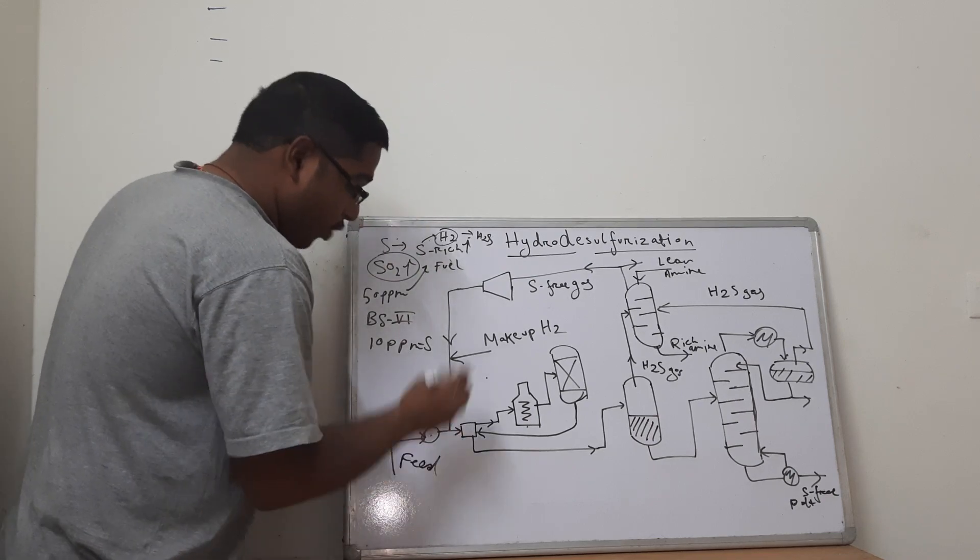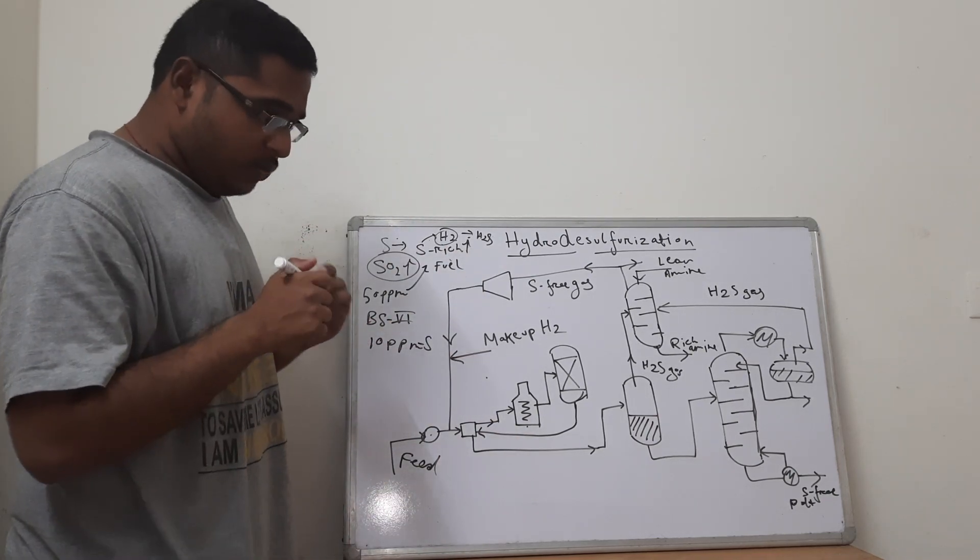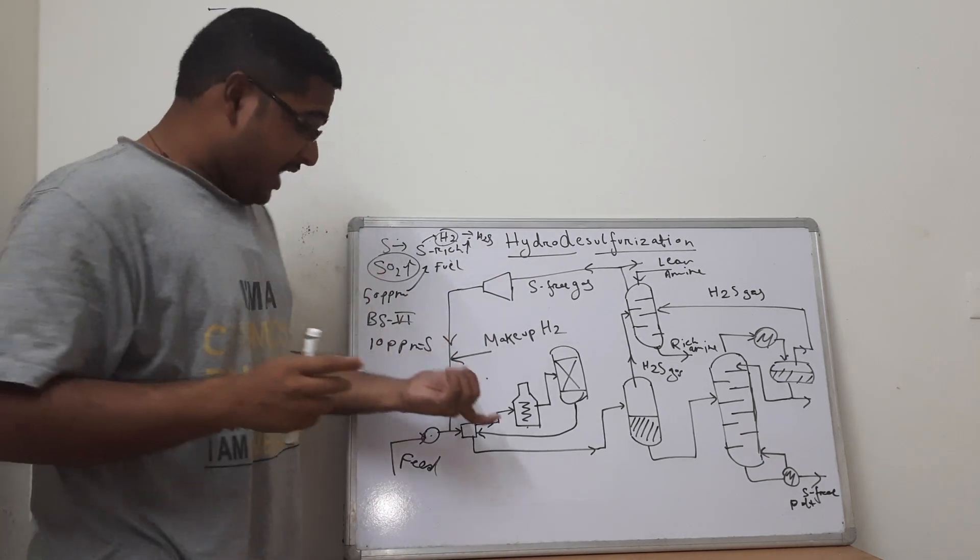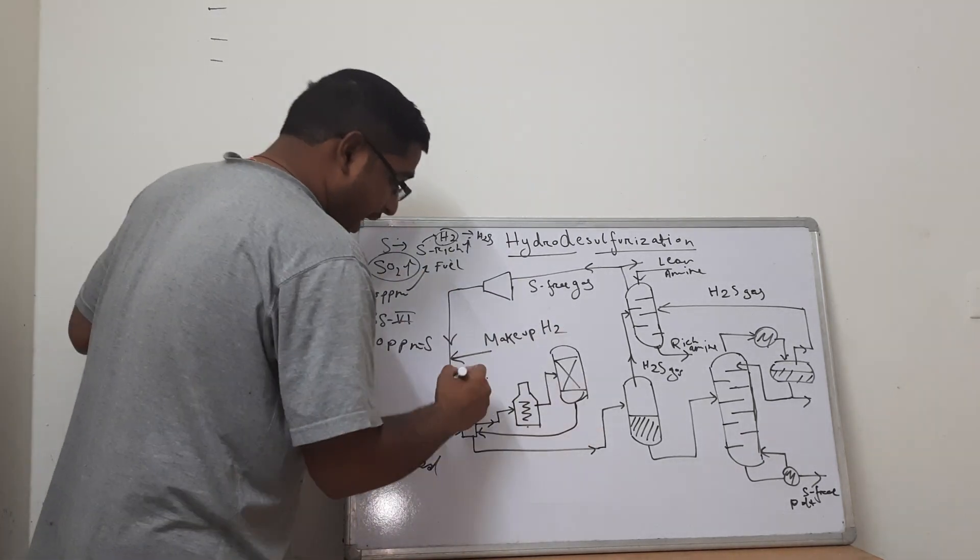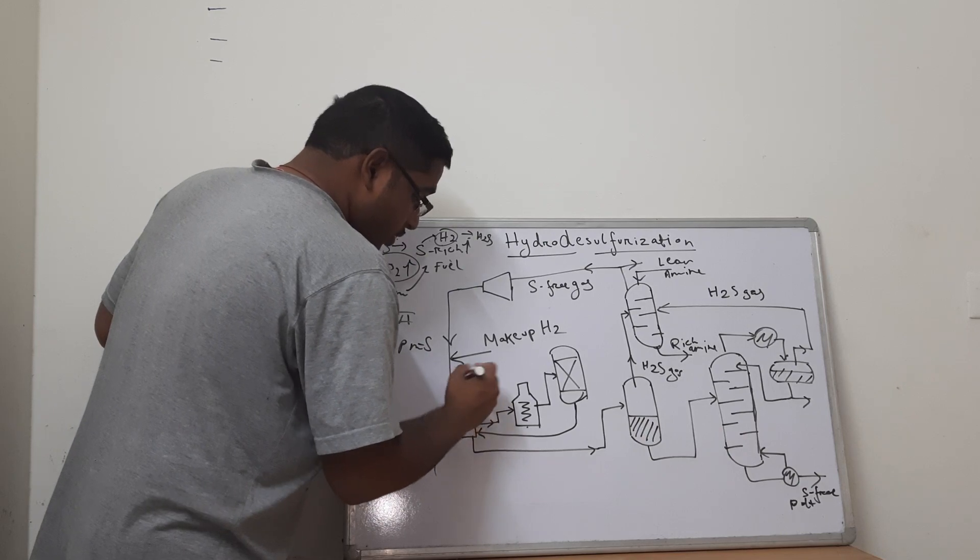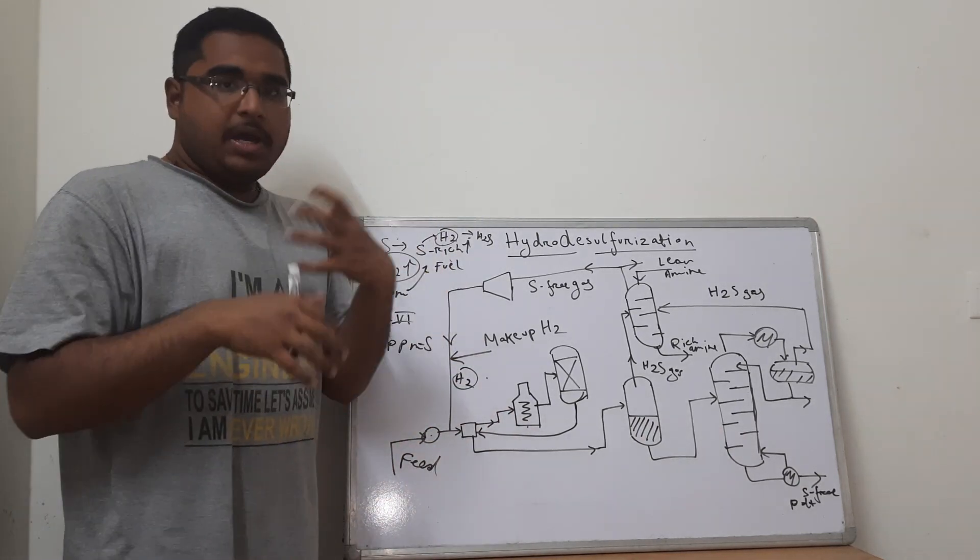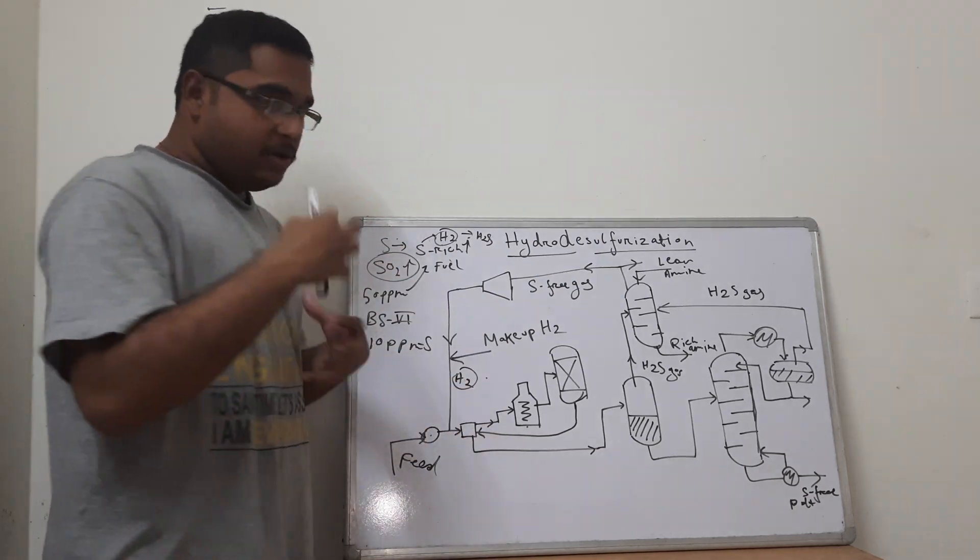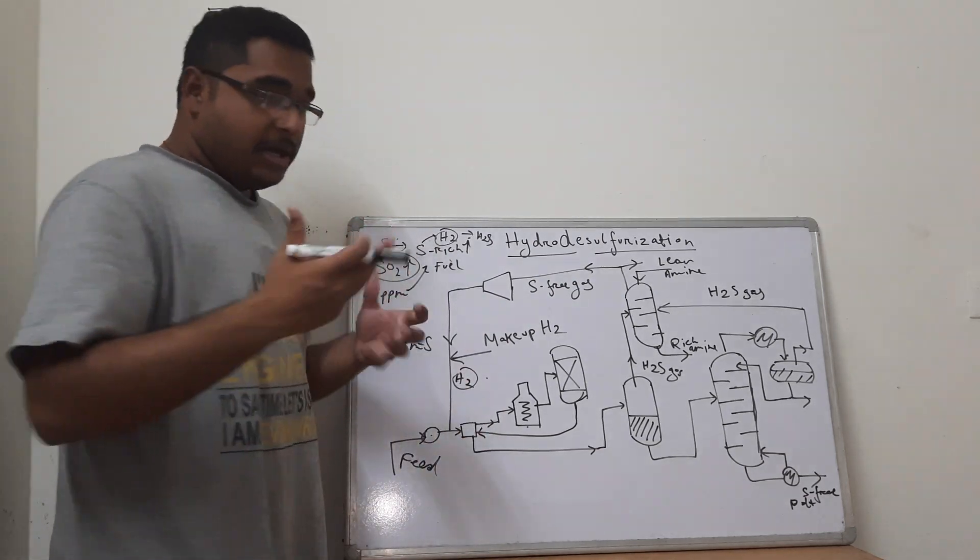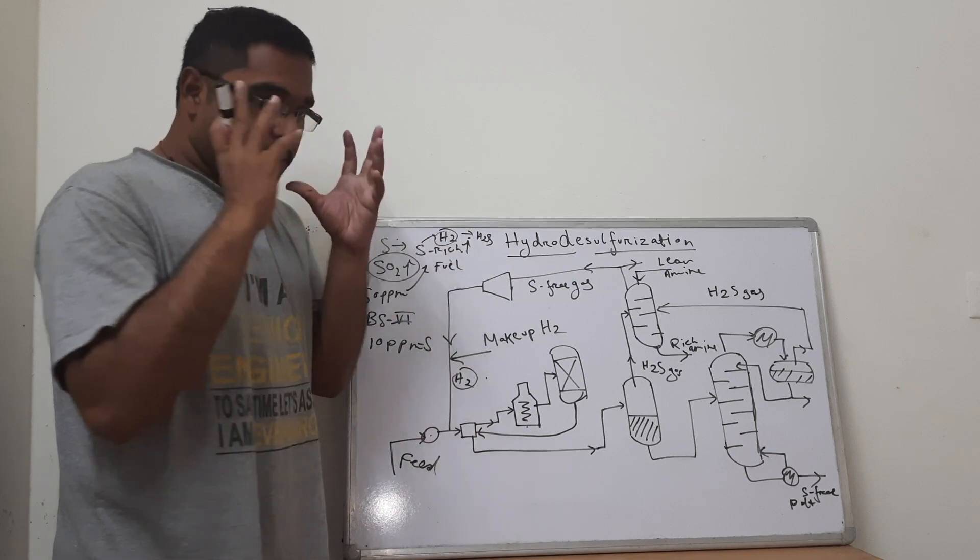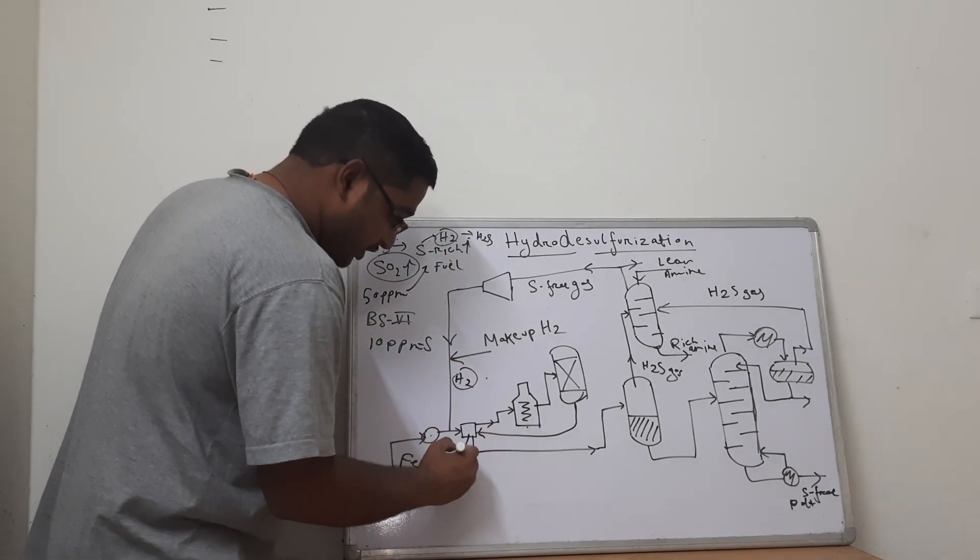We are sending the feed through a pump into a heat exchanger, wherein we are primarily heating the reactor. Along with it, we are seeing that we are mixing H2. So basically, it is going in a heat exchanger. The gas mixture or the gas-liquid stream is going into a particular mixer, wherein it is being mixed.